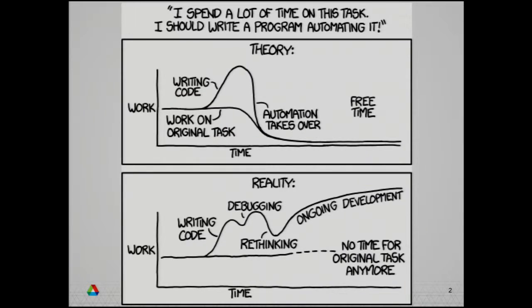There's a funny situation we probably all find ourselves in: faced with a repetitive task, you have a choice — whether you're going to do the same thing 100 times over, or whether you'll write a small piece of code to do it and never have to do the repetitive task again. This XKCD comic strikes at that. You think it'll be a little more work to write the code, but you'll finish in the same amount of time. That's the theory, at least.